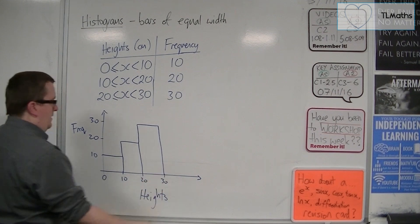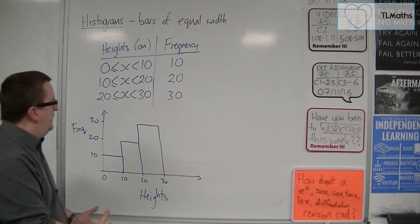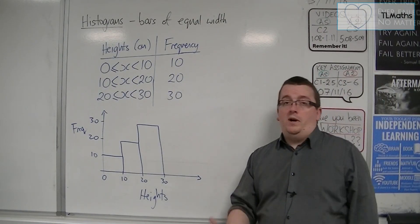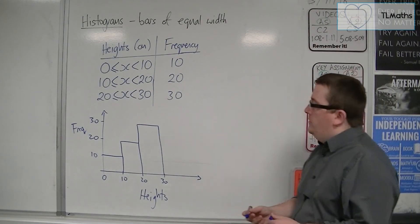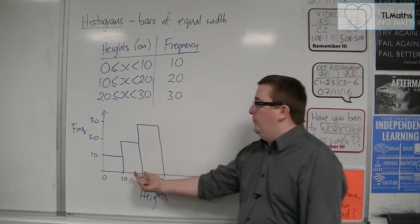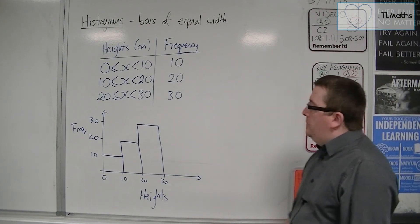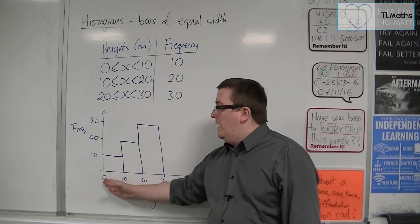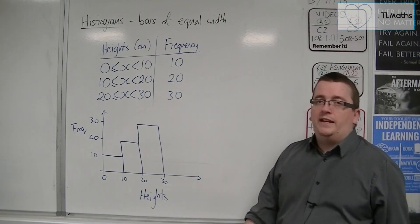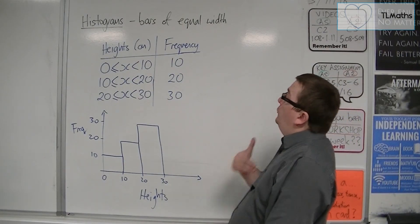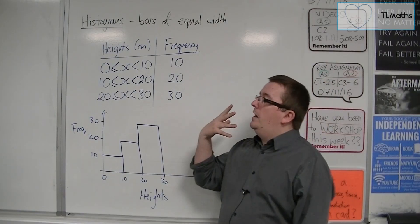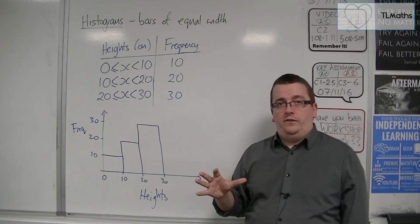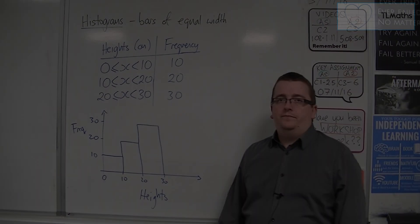Apologies if my bars aren't straight. So that is a histogram — compare this with a bar chart. Notice how there are no gaps between the bars, and there are no labels in the middle of the bars. We have here continuous data. You'll also want to compare this with the next video on histograms with bars of unequal width to see how we draw that.